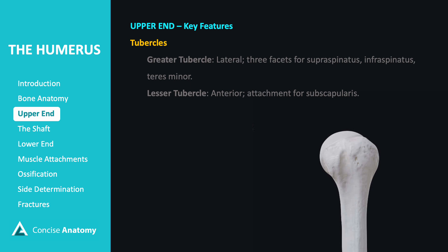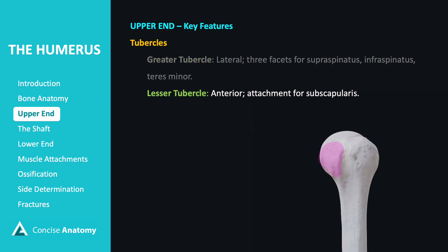The humerus features two prominent tubercles. The greater tubercle is located on the lateral side of the humerus and has three distinct facets, providing attachment points for the supraspinatus, infraspinatus, and teres minor muscles, which are part of the rotator cuff group. The lesser tubercle is found on the anterior aspect of the humerus and serves as the attachment site for the remaining rotator cuff muscle, the subscapularis.